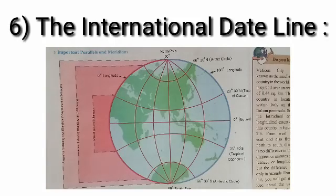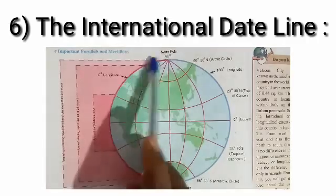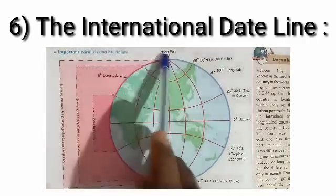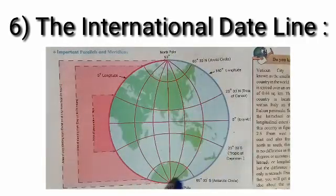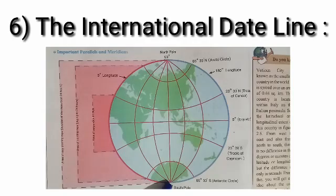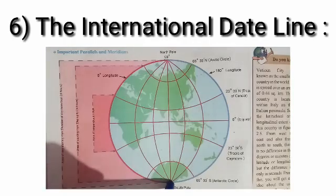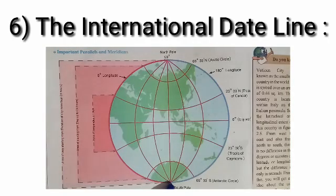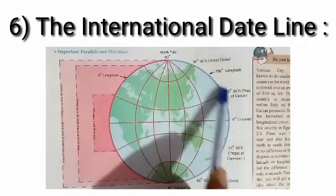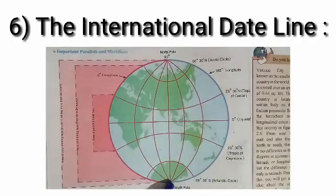The international dateline. We all know, the exact opposite of zero longitude is 180 longitude. The international dateline is marked with reference to 180 meridian. This is the international dateline.